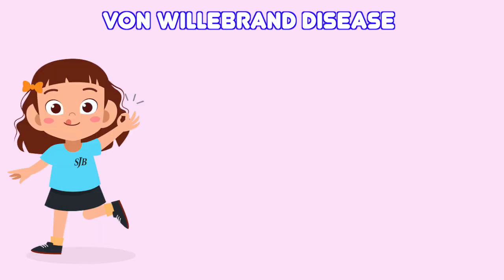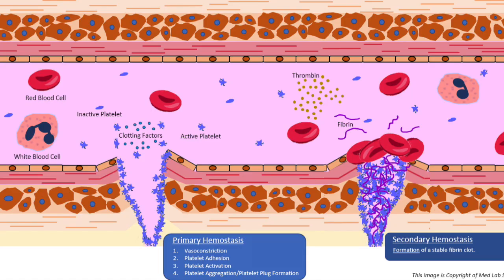I think I have understood now. In primary hemostasis, platelets — which are cell fragments without nuclei — first adhere, then activate, and lastly they aggregate.